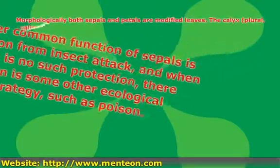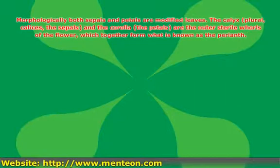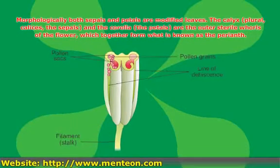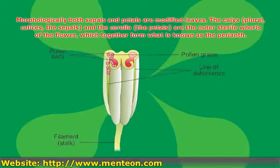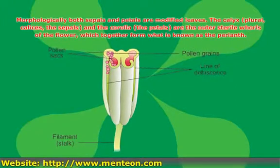Morphologically, both sepals and petals are modified leaves. The calyx (plural: calyces) — the sepals — and the corolla — the petals — are the outer sterile whorls of the flower, which together form what is known as the perianth.